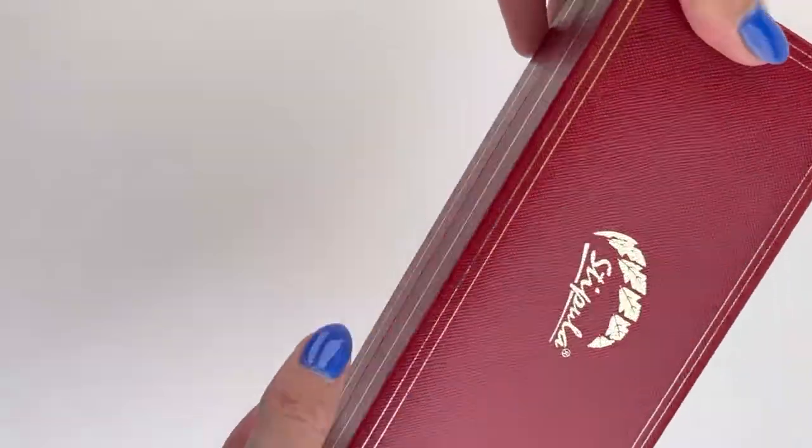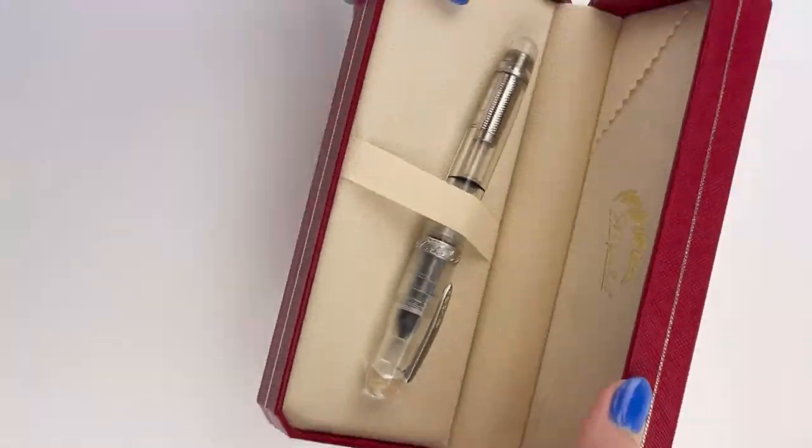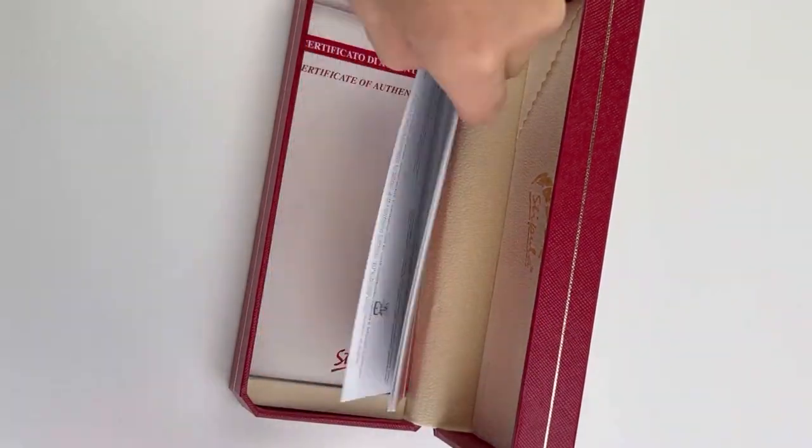Okay, let's do an unboxing. This is the Stipula Etruria Rainbow Fountain Pen. It comes in the Stipula Red Box with gold accents.